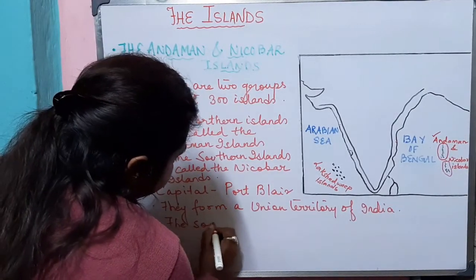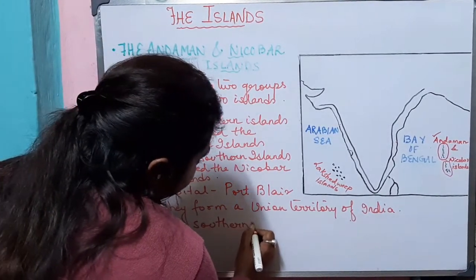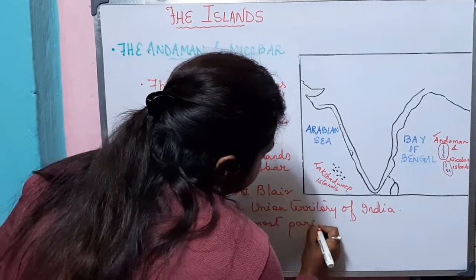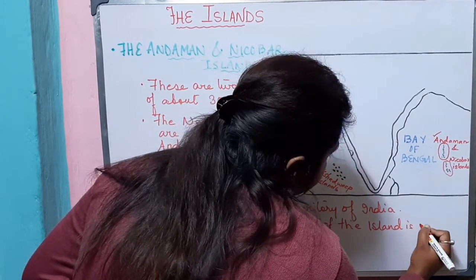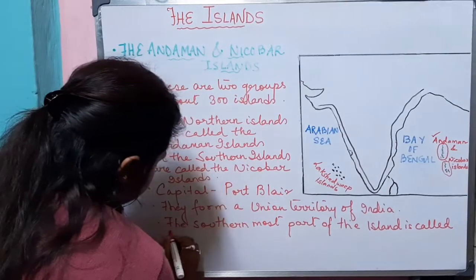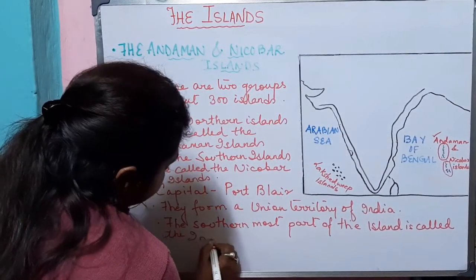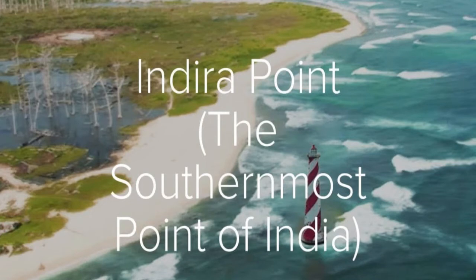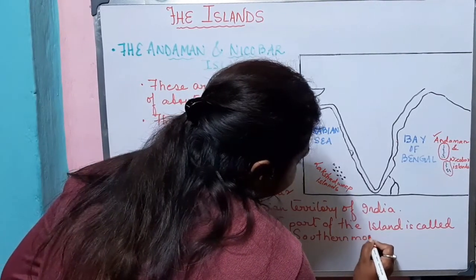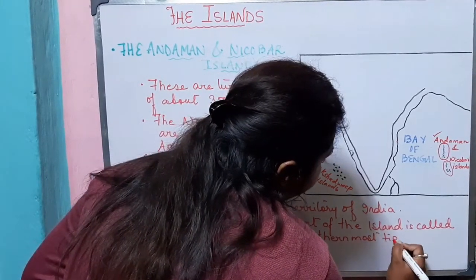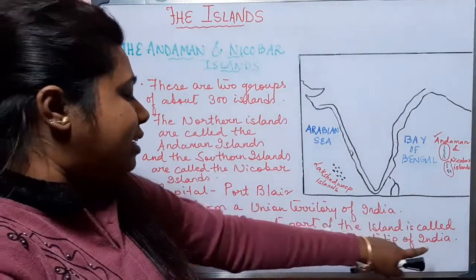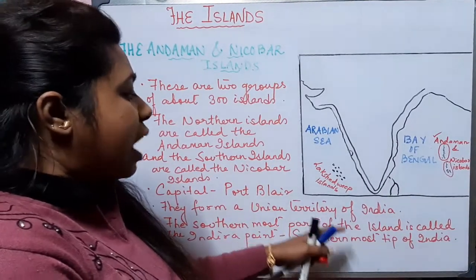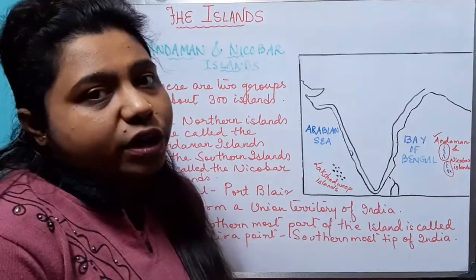The southernmost part of the island is called Indira Point, which is the southernmost tip of India. The southernmost part of the Andaman and Nicobar Islands is the Indira Point, which is the southernmost tip of our country India.